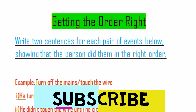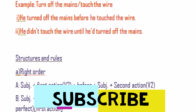Example: turn off the mains, toss the wire. Option A: he turned off the mains before he tossed the wire. Option B: he did not toss the wire until he had turned off the mains.